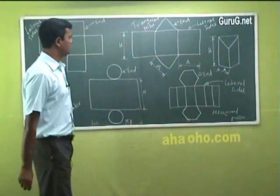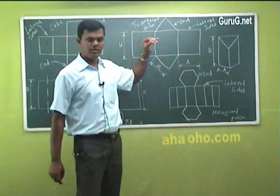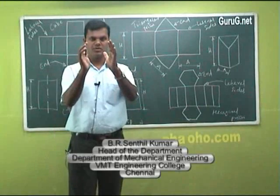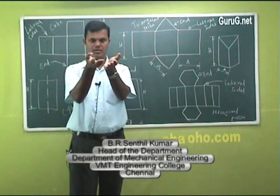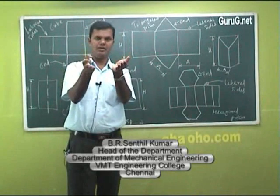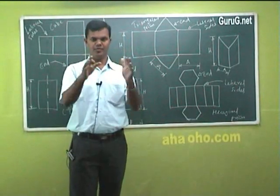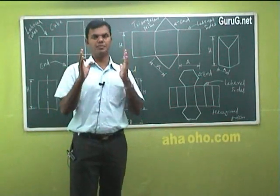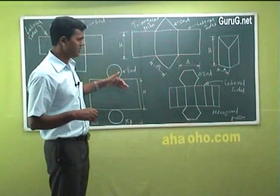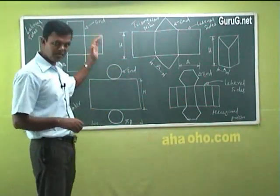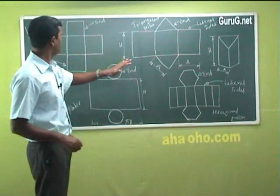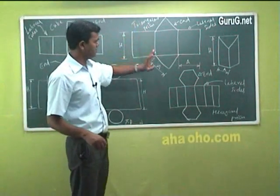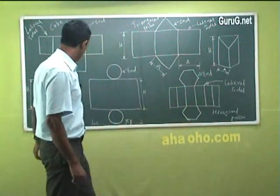We have seen the development of a simple square prism — like a biscuit box, where the paper surrounds all faces and sides. If you open it and place it on a table or plain surface, that is called the development of that particular shape. Like that, there are many shapes: cube, triangular prism, hexagonal prism, and cylinder.